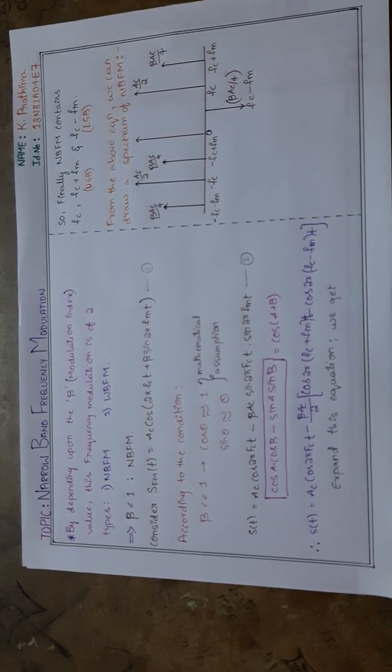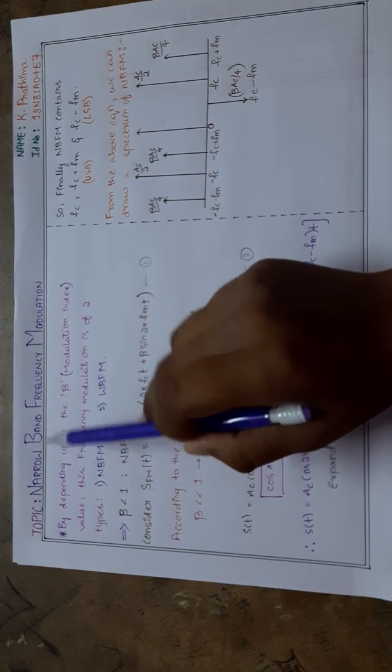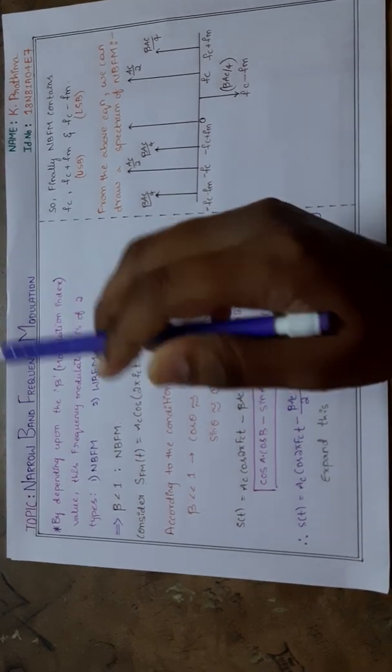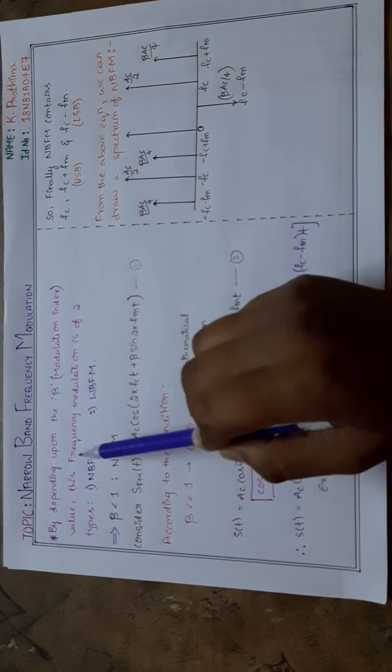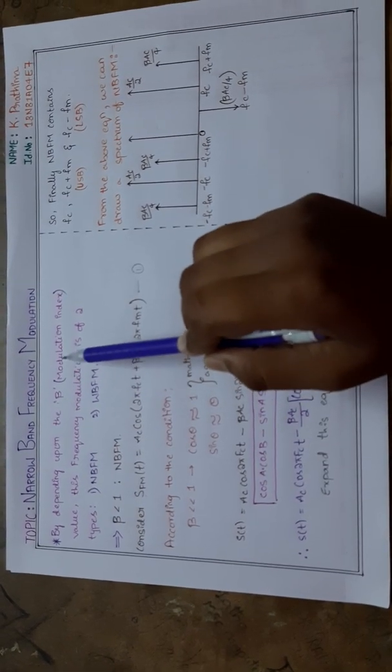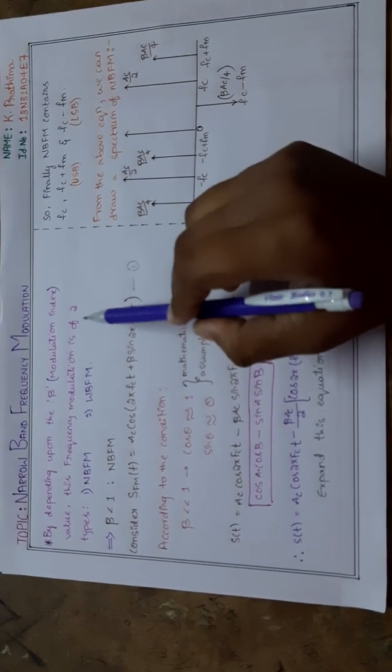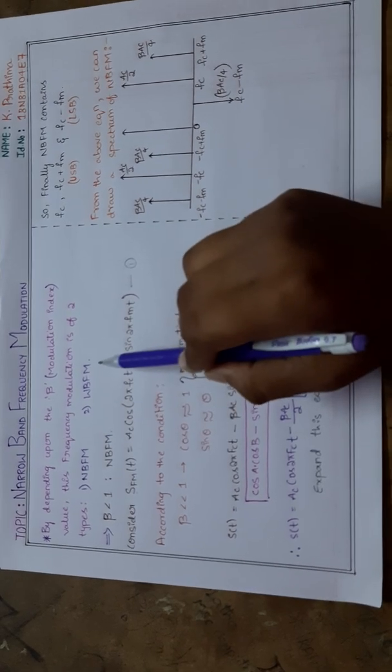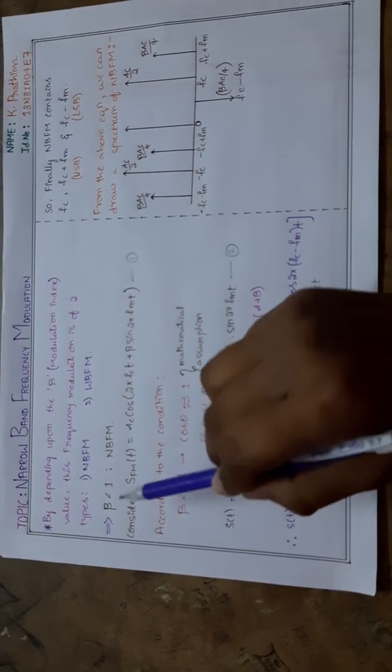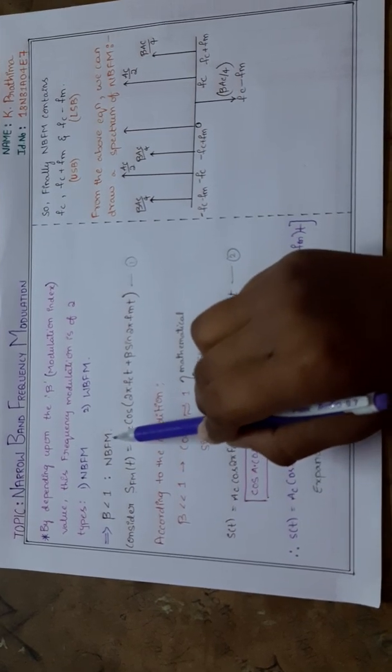Good evening, I am Pratima. Today we are going to discuss narrow band frequency modulation. Depending upon the beta, that is the modulation index value, frequency modulation is of two types: narrow band frequency modulation and wide band frequency modulation. When beta is less than one, it is called narrow band frequency modulation.